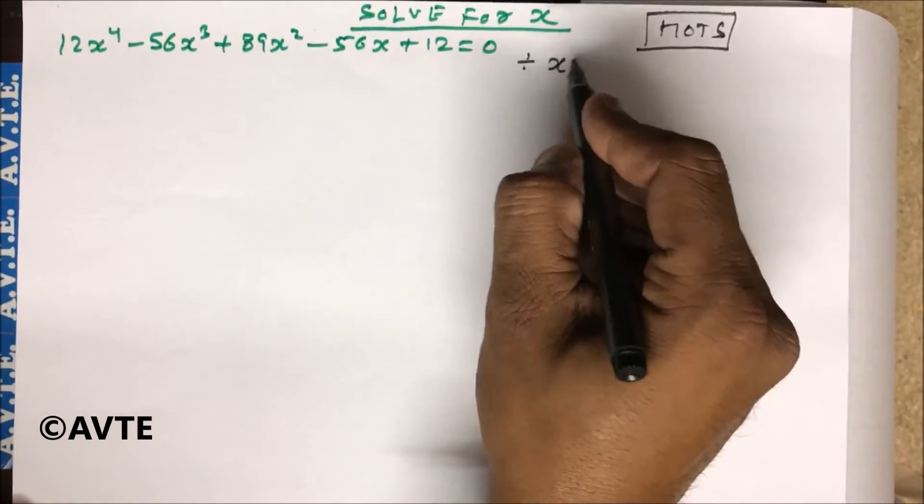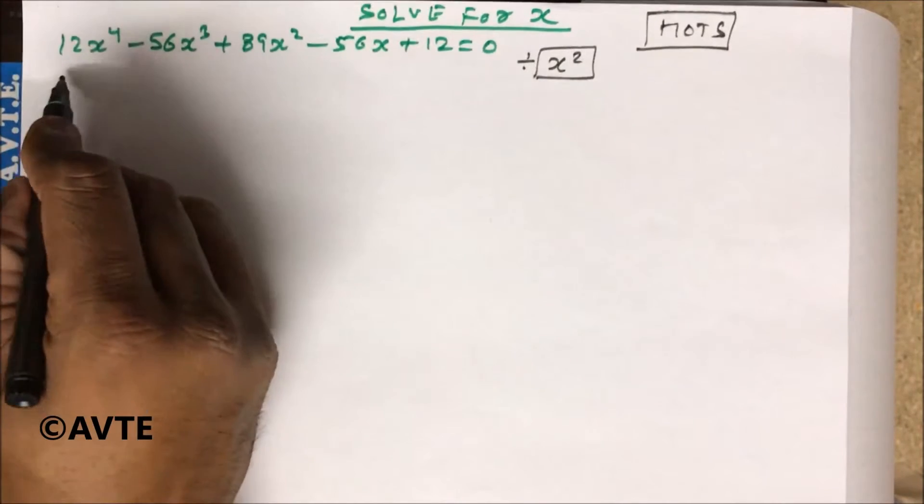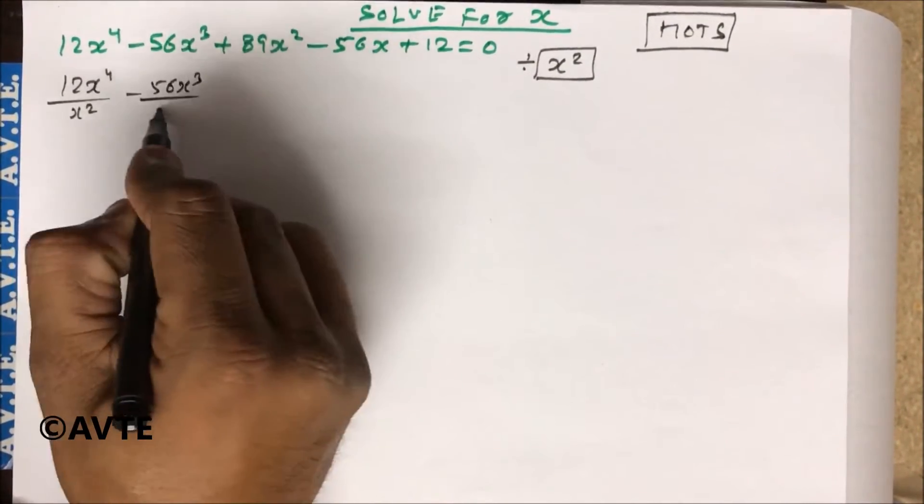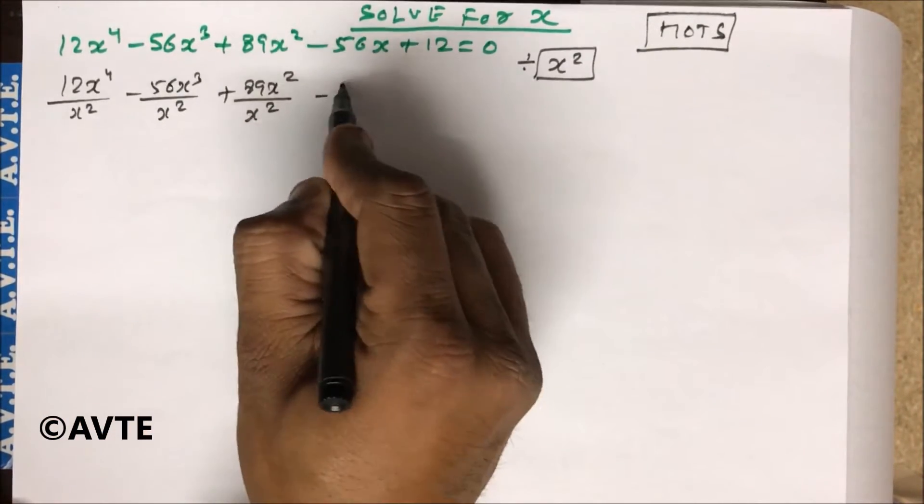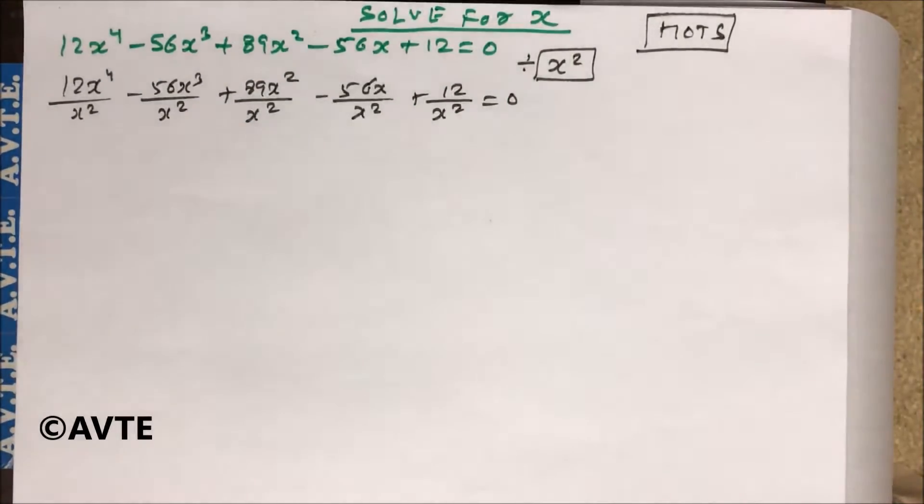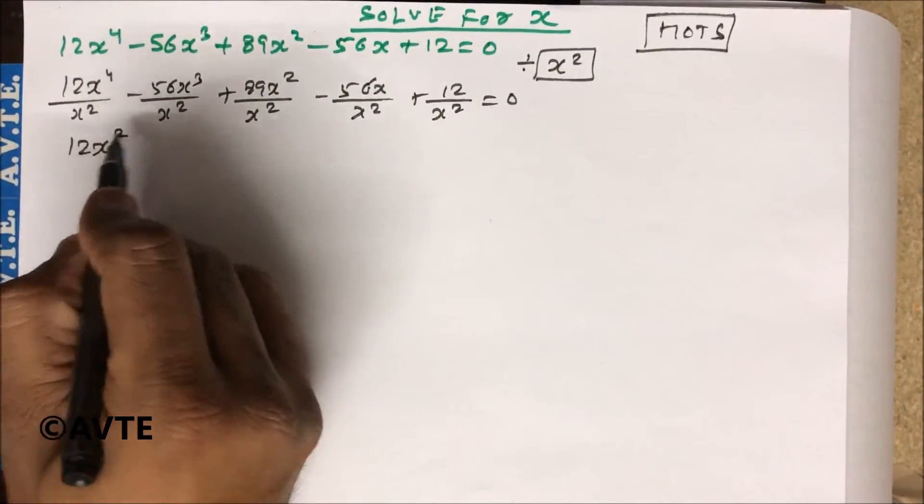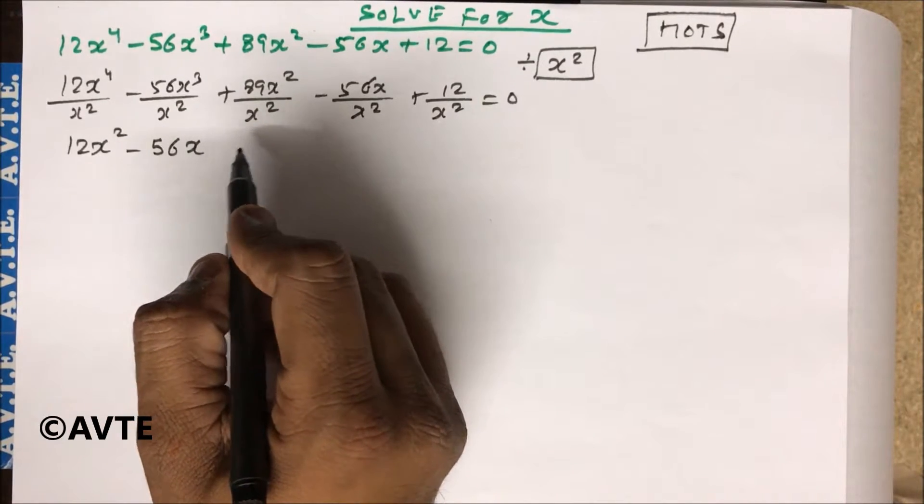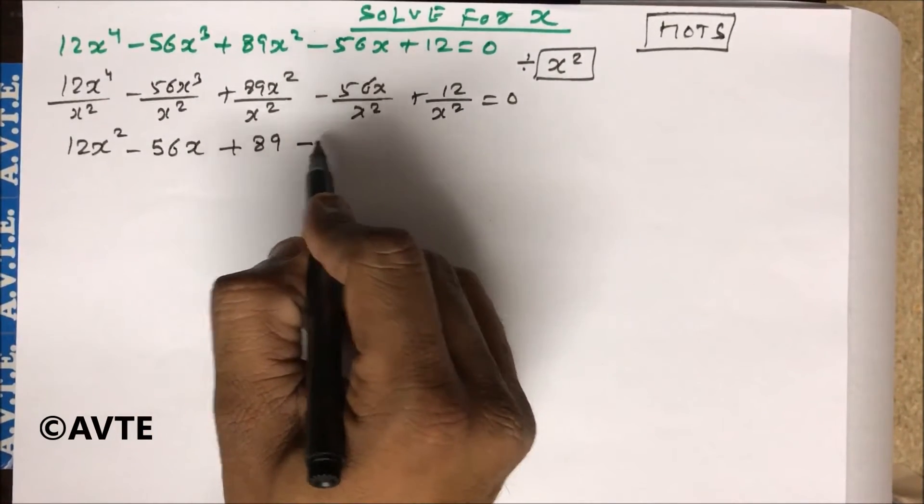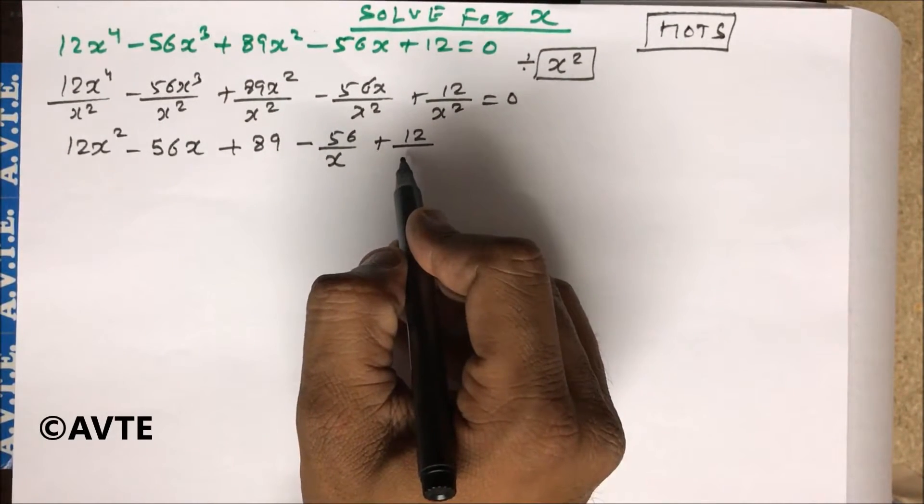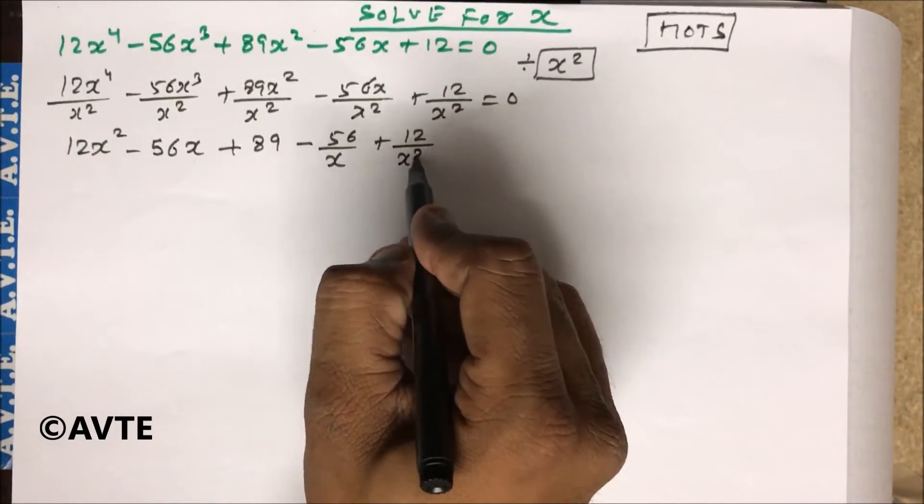You just divide the whole equation by x square. See the magic, this is x square minus 56. What we have? We have 12x⁴ - 56x³ + 89x² - 56x + 12 = 0.